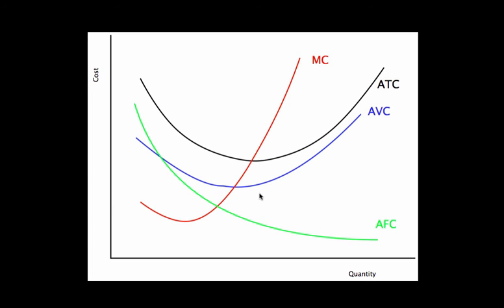If we're drawing this precisely, the AVC and ATC curves should be getting closer and closer together. Remember, the difference between these two curves is average fixed cost, and average fixed cost is approaching zero. So if AFC is approaching zero, AVC and ATC are approaching each other. AVC is becoming a larger and larger part of average total cost, so these curves will converge.